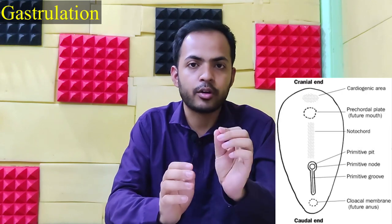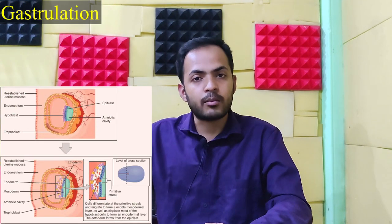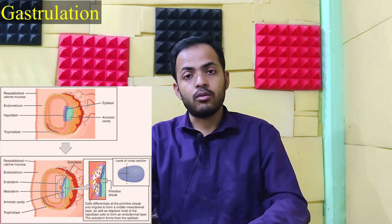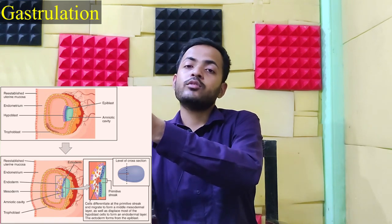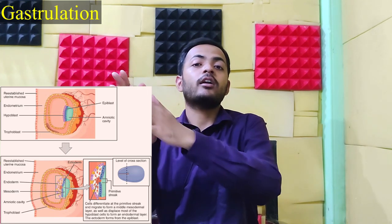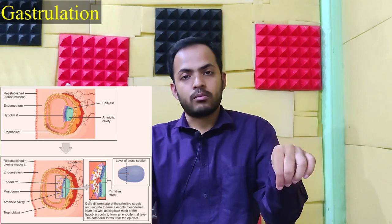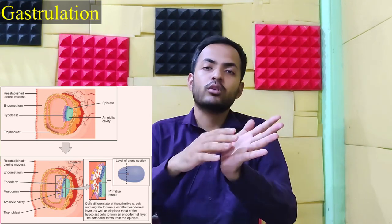A few cells from the epiblast migrate towards the primitive streak. During this migration, these epiblast cells displace and replace all the cells of the hypoblast, and are converted into endoderm. Then a few more epiblast cells migrate toward the newly formed endoderm, combine with some endoderm cells, and ultimately form the mesoderm. The remaining cells of the epiblast are converted into ectoderm. Ultimately, we obtain three germ layers: endoderm, mesoderm, and ectoderm.